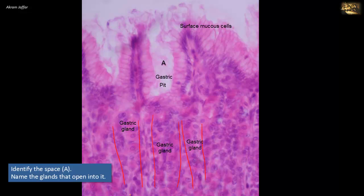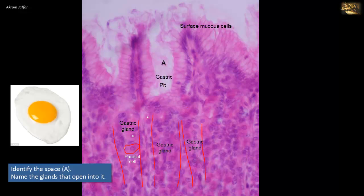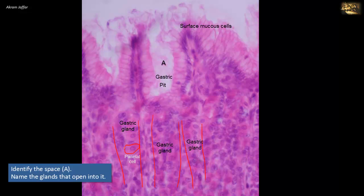To confirm these are gastric glands, note the parietal cells distributed along the length of the glands, most numerous in the isthmus or upper part of the gland. These parietal or oxyntic cells are characterized by their large rounded nucleus and extensive eosinophilic cytoplasm — that is why they are called oxyntic cells. The nucleus is centrally located, giving them a fried egg appearance. These cells secrete gastric acid and are a feature of the stomach. So space A is a gastric pit, and the glands that open into it are the gastric glands.